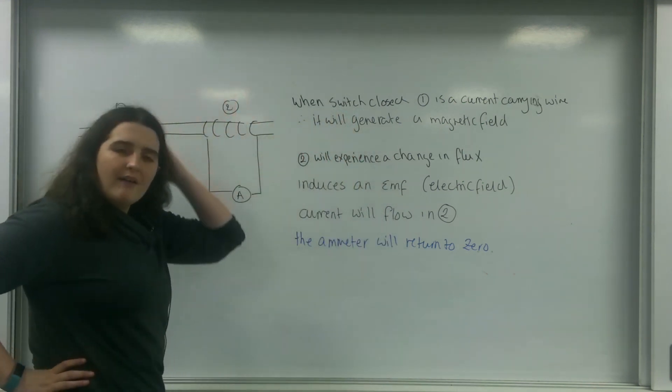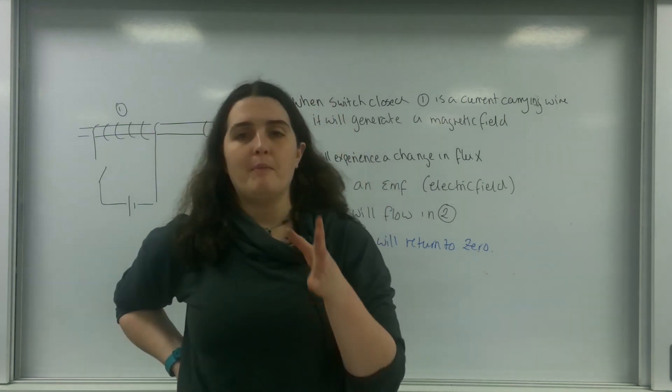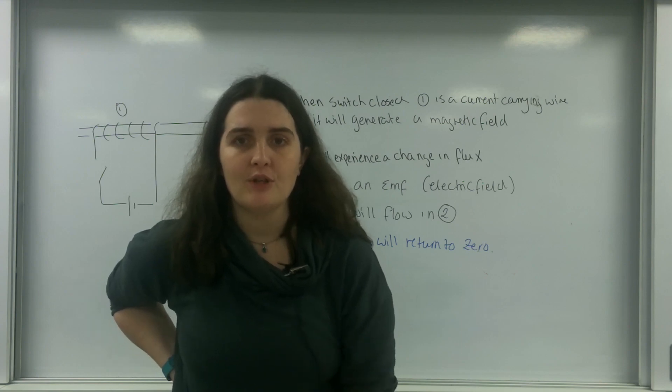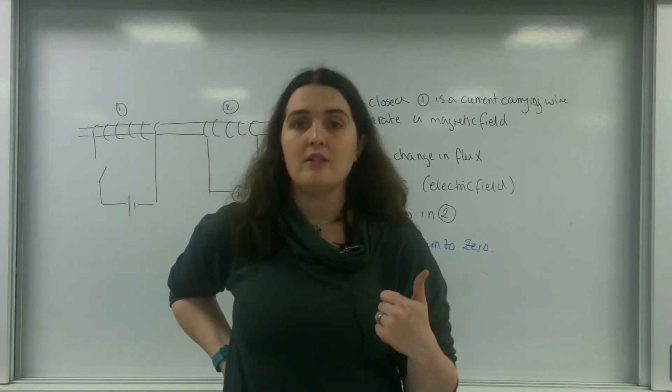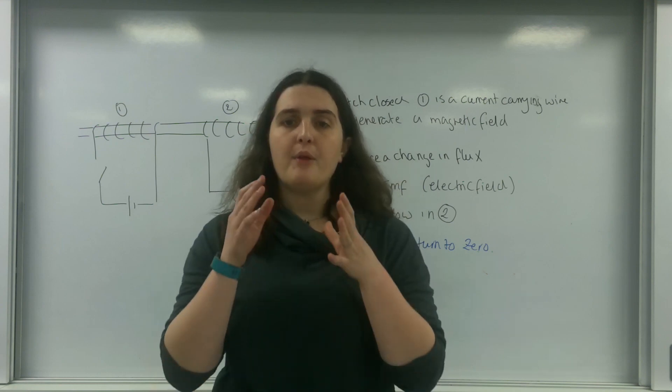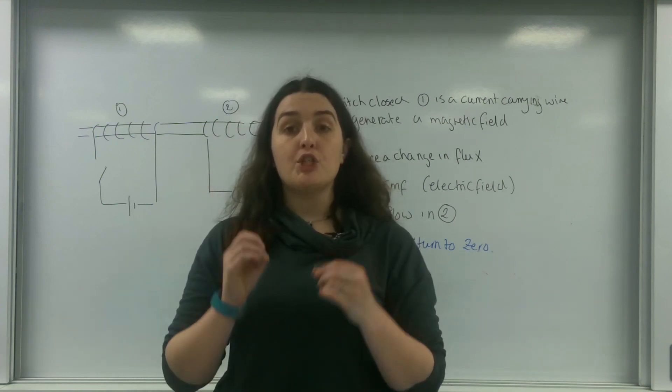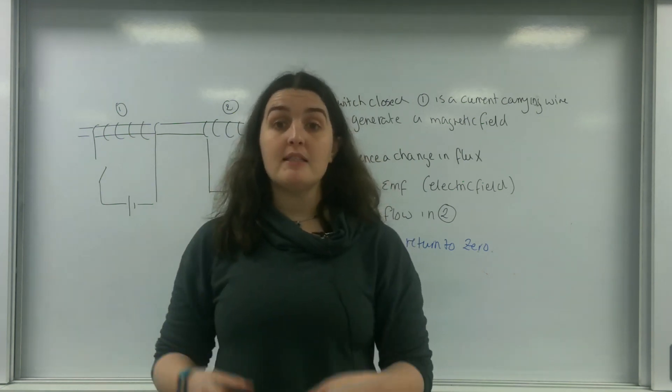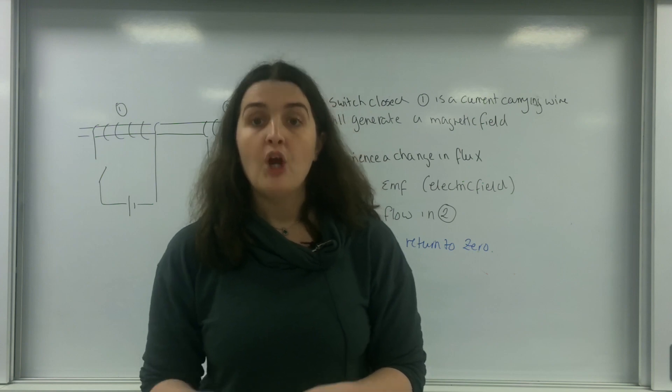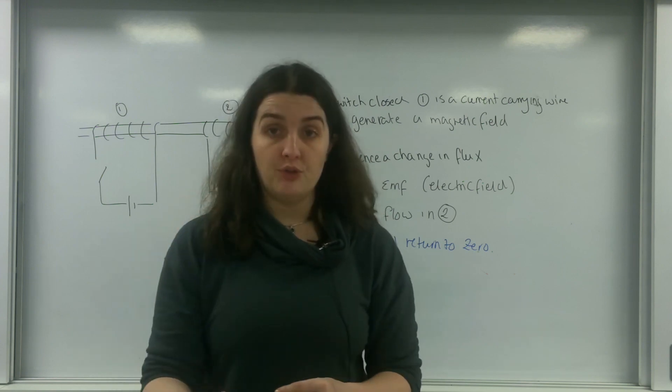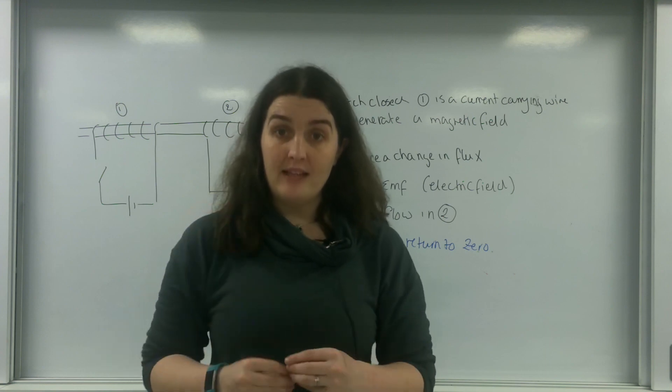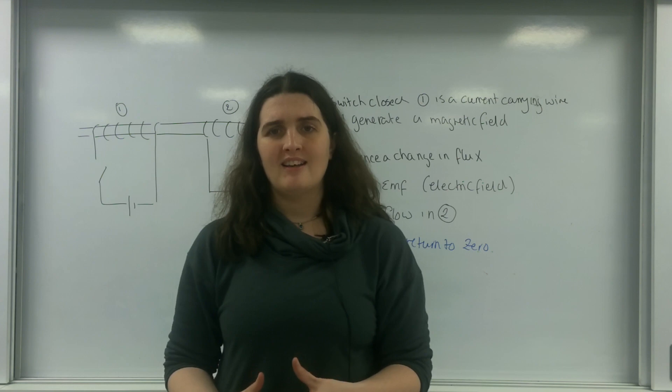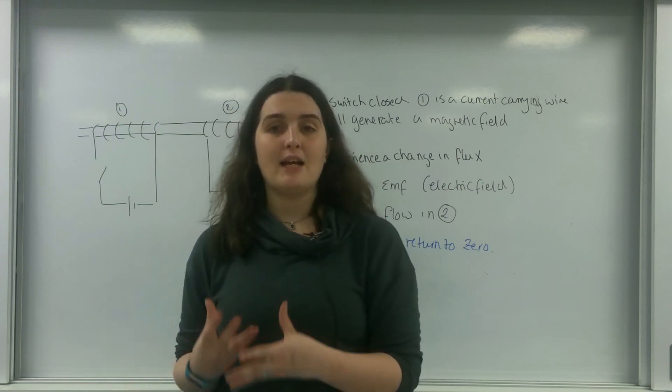So these three lines, if you're ever asked why electromagnetic induction is happening, or why is a current being induced, you can literally regurgitate the three lines I just said there. That one object is a current carrying wire which generates a magnetic field. The other wire experiences a change in flux, which means an EMF is induced. This induces a current. If you say those things, you will get most of the marks in that question.